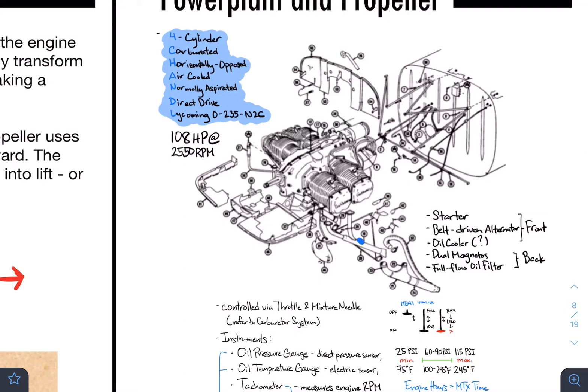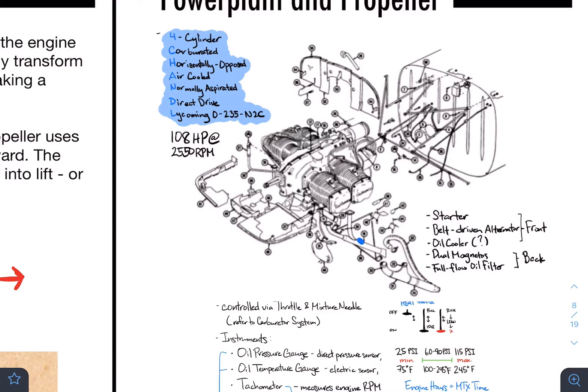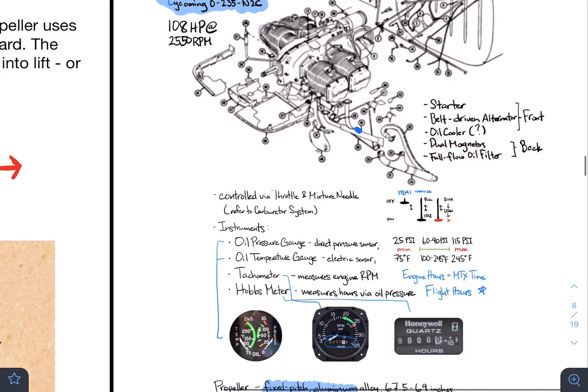Let's go over the engine real quick with a quick diagram. It is not mechanic-level detail, but it shows the general shape of the engine and its main use. There are fuel tanks; the fuel runs through the carburetor and into the cylinders, which create the necessary energy for the plane. The acronym is CHANDLE, and max performance is 108 horsepower at 2,550 RPM.